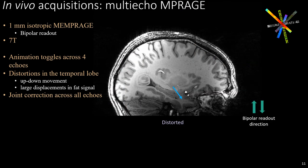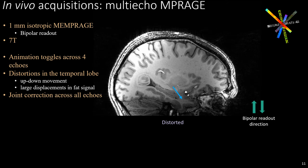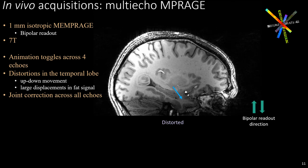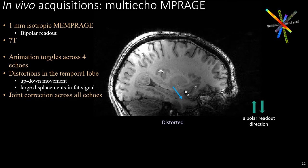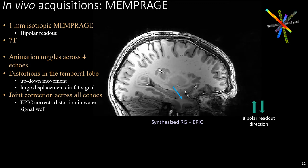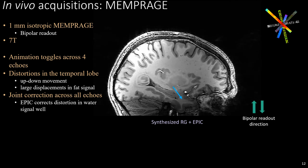We show a 1 mm resolution multi-echo MPRAGE dataset. The animation toggles across all four echoes, and we can observe movement in the temporal lobe due to distortions. EPIC stabilizes the temporal lobe, corrects the distortion, and aligns all the echoes, eliminating the up and down movement. This can improve the relaxation parameter estimation from these echoes.